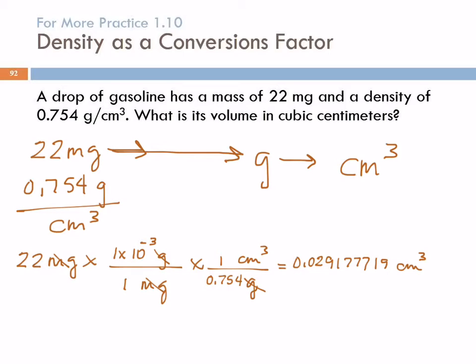How many sig figs? Two. 22 milligrams. That's a whole number, but it's not a counting number or a defined quantity or an integral part of an equation. That's a measurement. It's got two sig figs. This is exact. This density is a measured quantity. It is not exact either. But this is two sig figs, three sig figs. We go with the smallest.